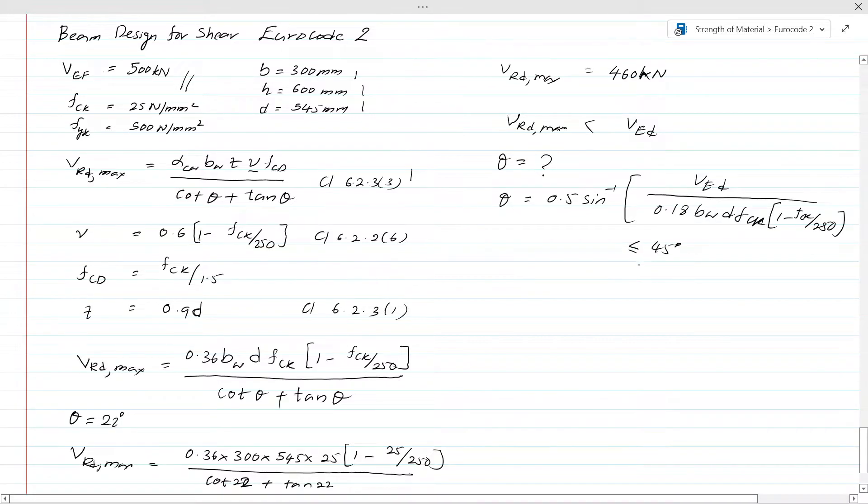Now let's calculate θ from our data: 0.5 × sin inverse of [VEd that is 500 kN in Newtons divided by 0.18 × b_w (300) × d (545) × f_ck (25) × (1 - 25/250)]. From this we can calculate θ, and θ becomes 24.52 degrees. It is less than 45 degrees.